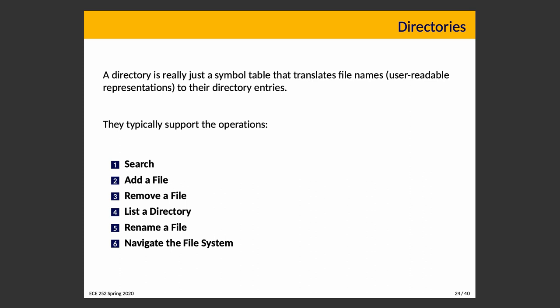A directory is really just a symbol table that translates file names into directory entries — just an organizational thing specifying that these files are found in this location. Directories typically support operations like: search (not just on file names but possibly on file contents); add a file; remove a file; list the directory; rename a file (which changes the user-friendly name and possibly internal organization if sorted by name); and navigate the file system — open subdirectories, go to a parent directory.